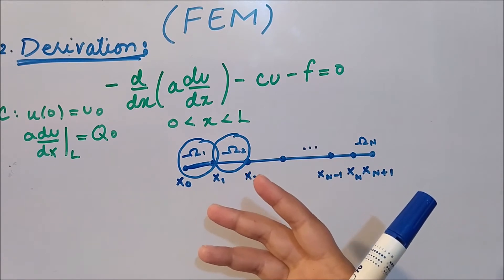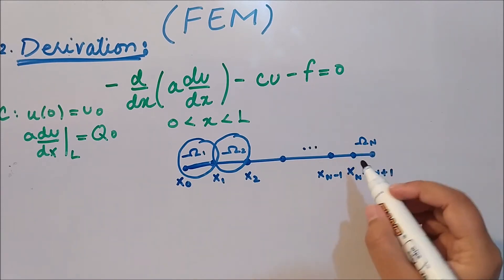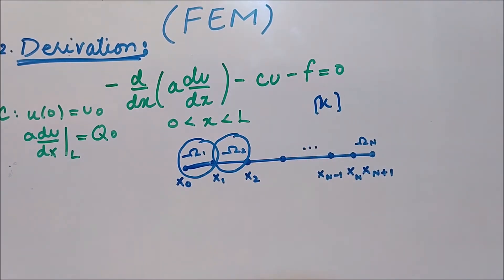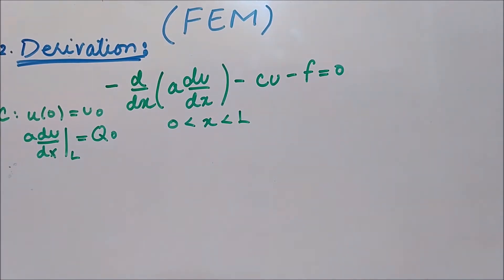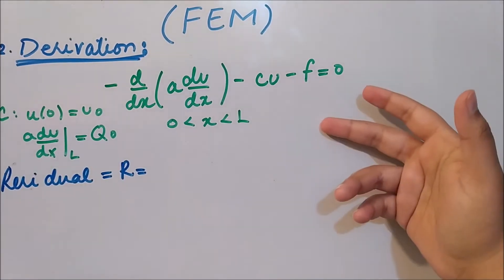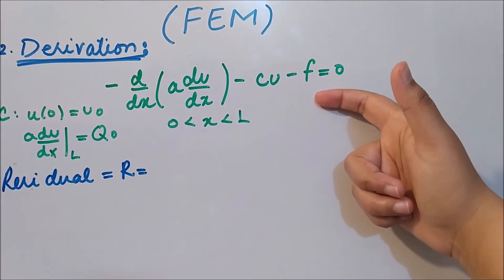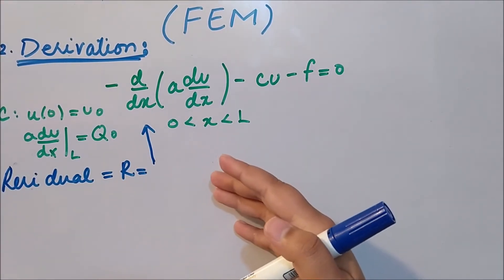Then we perform integration by parts to distribute the differential operator equally, so that we get the symmetric stiffness matrix represented by K. We find the residual of this differential equation — defined as left-hand side minus right-hand side. Since there is nothing on the right-hand side, the entire left-hand side is the residual.